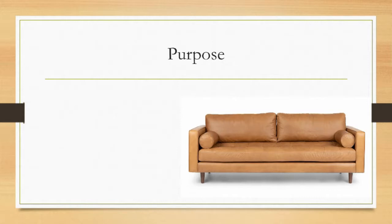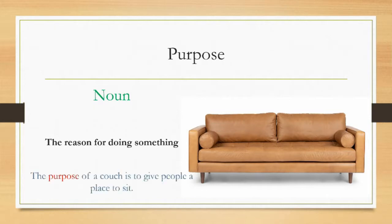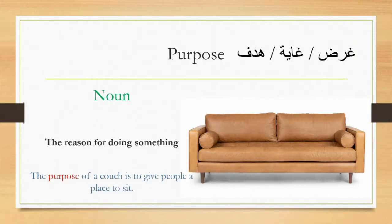The first word is purpose. Purpose is a noun — an ism. It means the reason for doing something. For example, the purpose of a couch is to give people a place to sit. This is the reason the couch exists — it's for people to sit. In Arabic we say gharad.